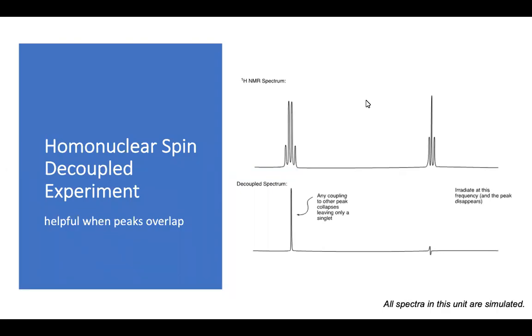Hello. Today we're going to talk about two closely related experiments. We'll start with the homonuclear spin-decoupled experiment, and then we'll talk about COSY. Both of these are helpful when you're trying to distinguish systems that have complex coupling, or coupling that maybe overlaps with each other.